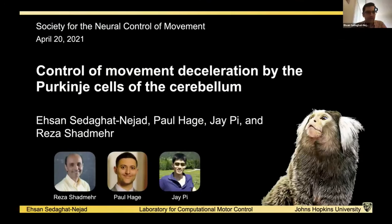Thank you very much to the organizers. My name is Ehsan Sedaghat-Nejad. I'm a PhD student at Shadmehr Lab at Johns Hopkins University. The work that I'm going to present today is a collaboration with my colleagues Paul Hage and Jay Pi, also PhD students at Shadmehr Lab. The title of the talk is Control of Movement Deceleration by the Purkinje Cells of the Cerebellum.